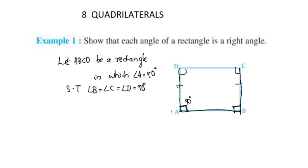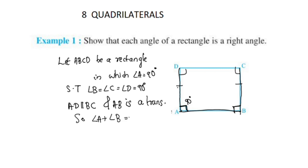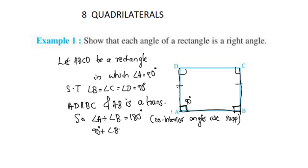Angle A plus angle B is equal to 180 degrees. The reason is co-interior angles are supplementary. Therefore, angle B is equal to 180 degrees minus 90 degrees, which is equal to 90 degrees.